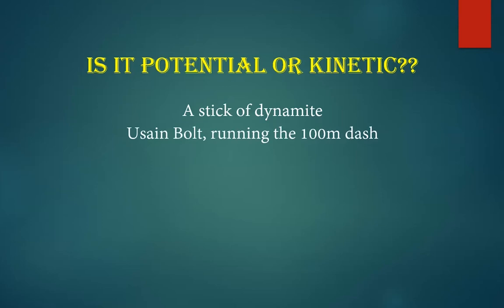What about Usain Bolt running the 100-meter dash in the Olympics? When Usain is running, he's got a lot of kinetic energy because he's moving very fast. But where did that kinetic energy come from? It came from the chemical potential energy he had stored in his body. Imagine how many times he could run the 100-meter dash before he collapsed, exhausted and out of fuel — probably hundreds of times. Each time he could only have a certain amount of kinetic energy from his speed, but since he could do it many times, he must have many more times that amount as chemical potential energy. So his potential energy clearly outweighs his kinetic energy.